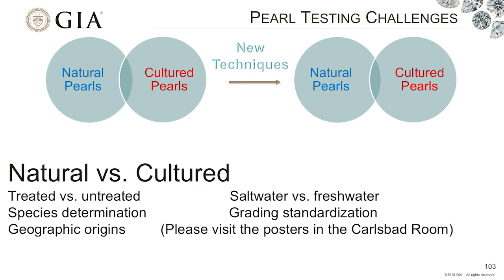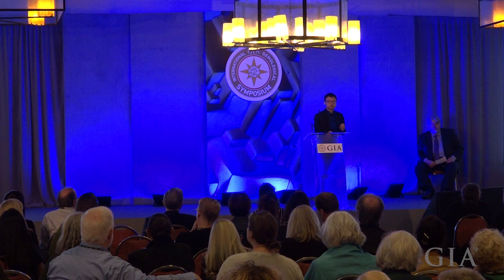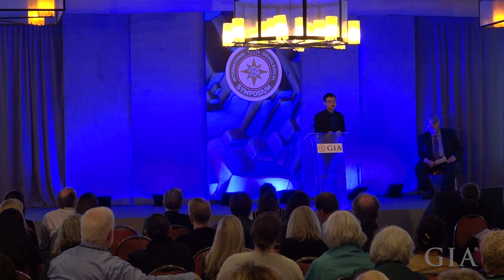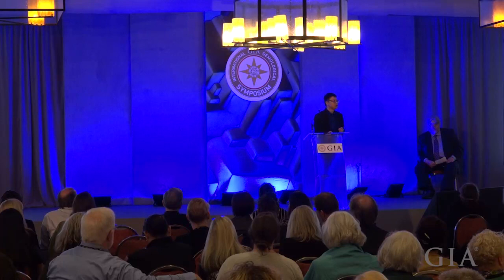While the majority of the pearls can be accurately identified using existing techniques, some challenges do remain. Most of the challenges are from the internal structures. There are some pearls exhibiting very borderline internal structures, which are very difficult to be interpreted even by experienced gemologists. Additional challenges include separating some treated versus untreated pearls, determining some species of the pearls, or separating geographic origin of the pearls.